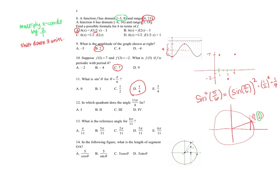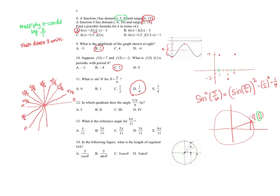Number twelve: in which quadrant does the angle 11π over 8 lie? Dividing the range from 0 to pi into 8 equal pieces gives increments of pi over 8. Counting up: pi over 8, 2π/8, 3π/8, 4π/8, 5π/8, 6π/8, 7π/8, 8π/8 equals pi, then 9π/8, 10π/8, 11π/8. That angle lands in the third quadrant.